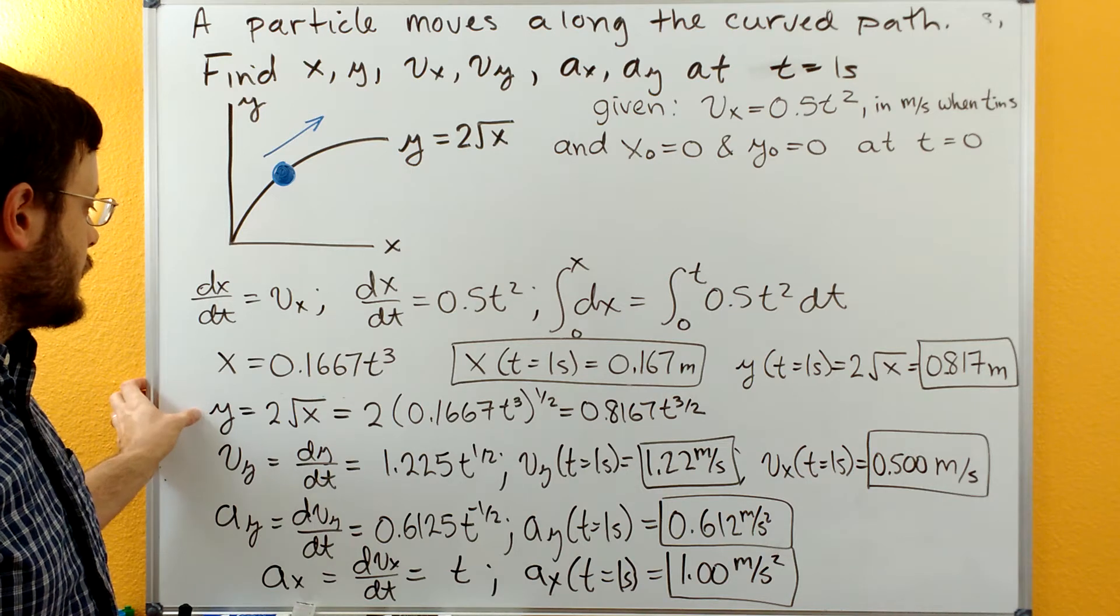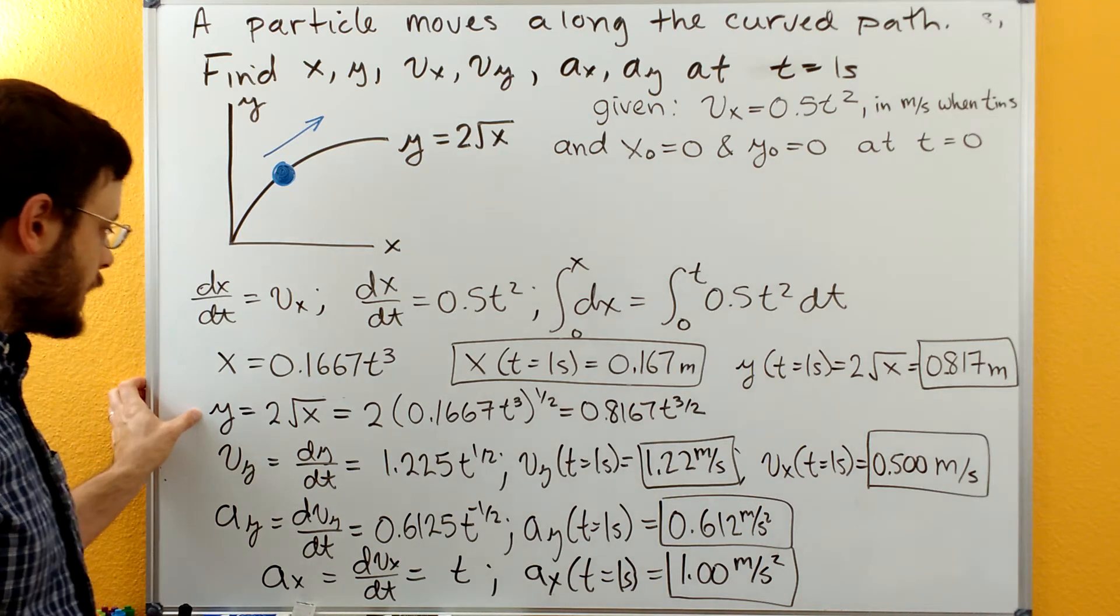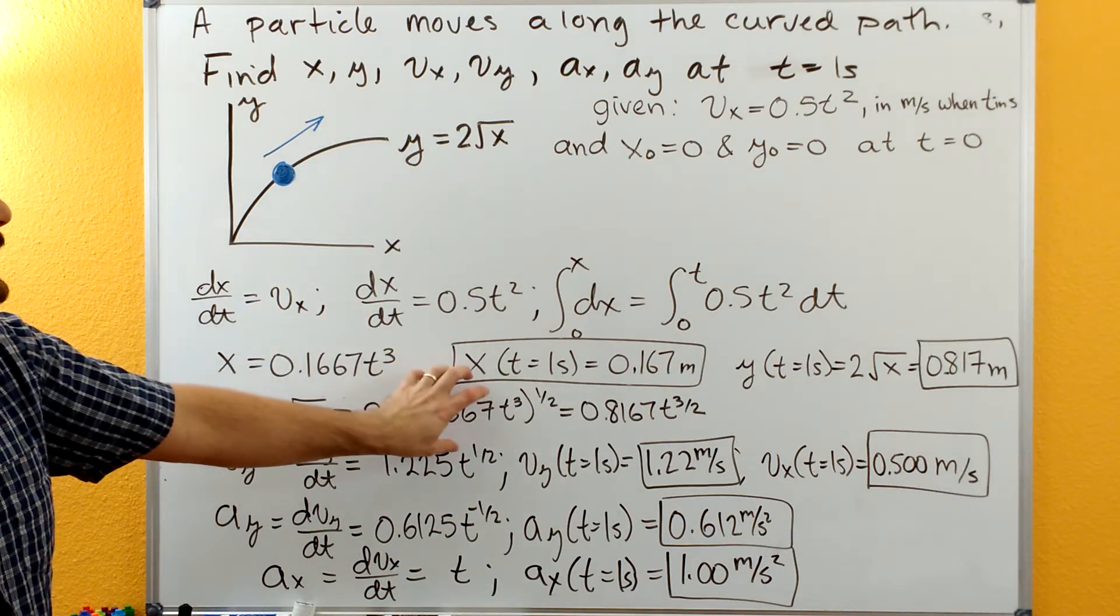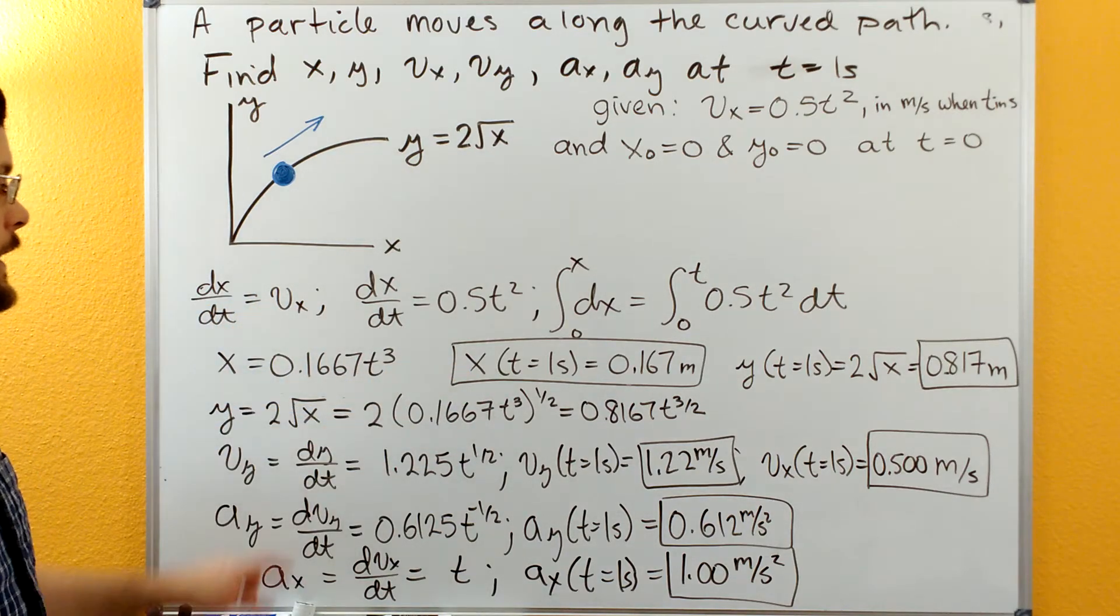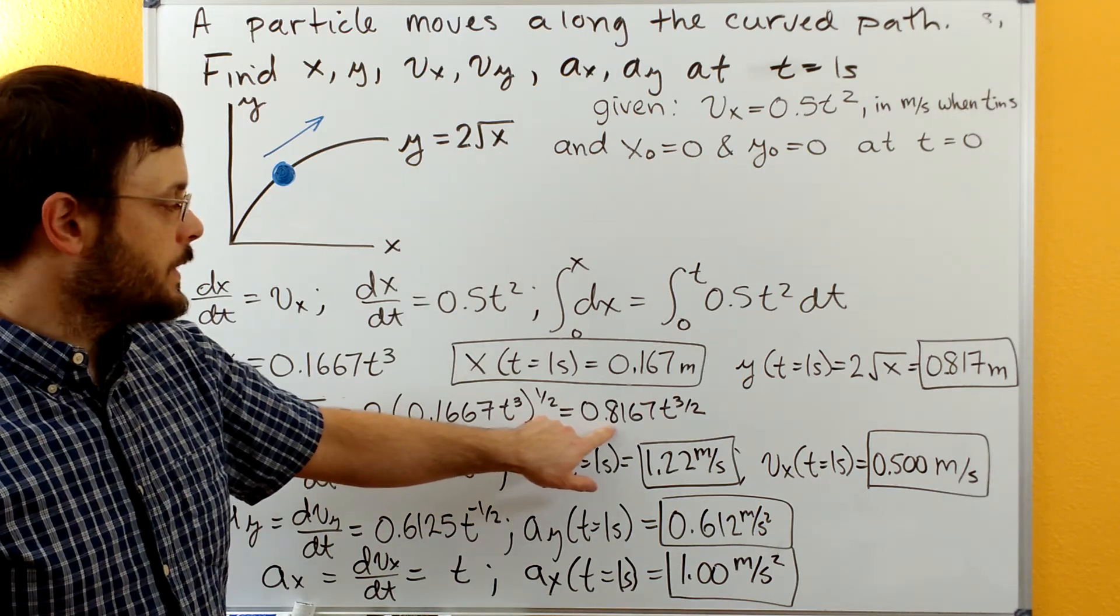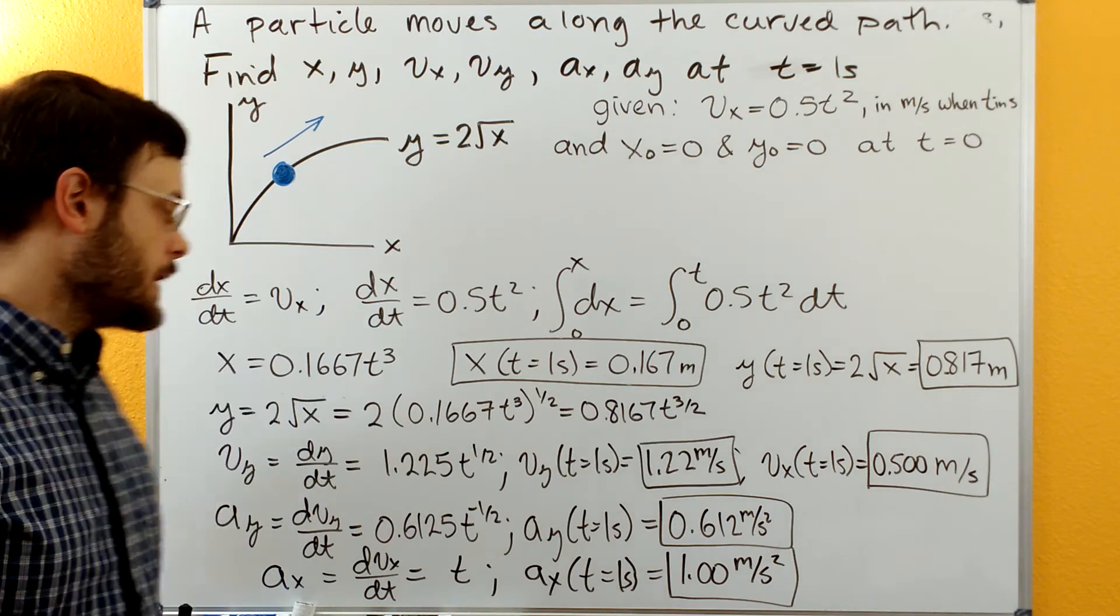Now we can look back at our equation for y, so y equals 2 square root of x. Let's plug this whole function back in here. So when we get that and finish up the algebra, we get that y equals 0.8167 t to the 3 halves.